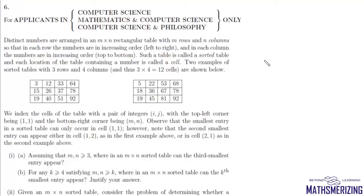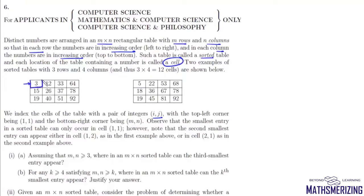In question number 6, distinct numbers are arranged in an m×n rectangular table with m rows and n columns, such that in each row the numbers are in increasing order from left to right, and in each column the numbers are in increasing order from top to bottom. Such a table is called a sorted table. Each location containing a number is called a cell, indexed by the pair (i,j). The smallest entry will be stored in cell (1,1).